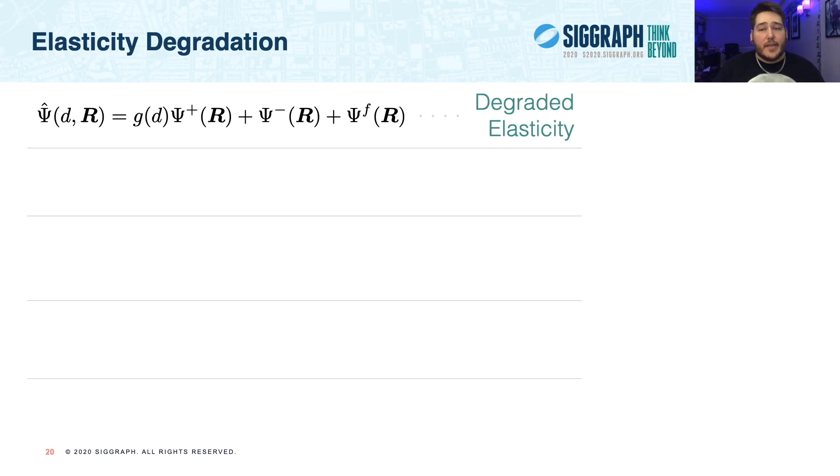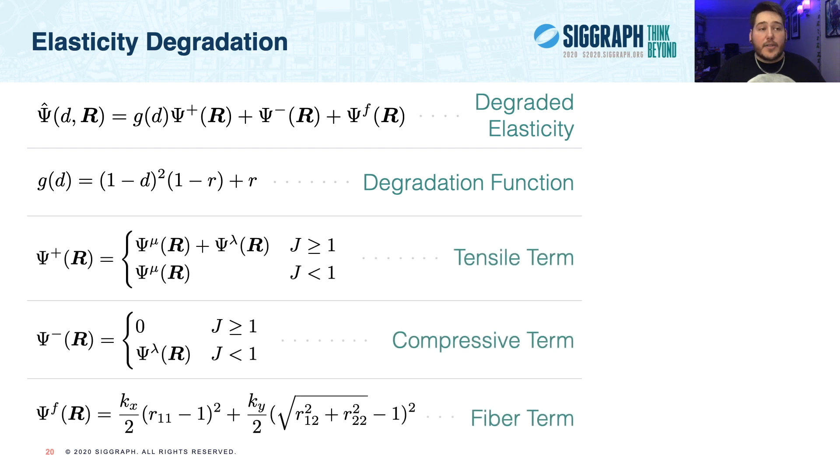At the top, we return to the degraded energy density, including the tensile and compressive terms, psi-plus and psi-minus. We also present the monotonic degradation function, G, that we use to couple damage and elasticity. Note that this includes a very small residual damage parameter, R, that prevents the unbounded growth of the deformation gradient when the material is fully damaged. And now let's look at how we construct the tensile and compressive energies using the shear and volumetric terms we just saw.